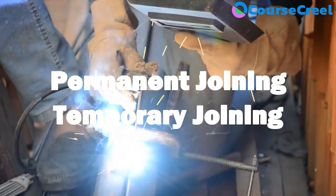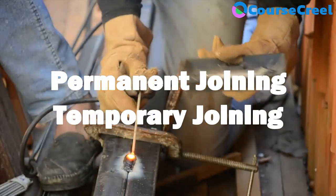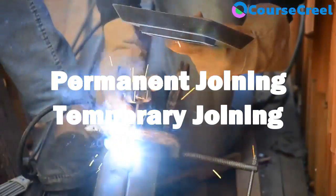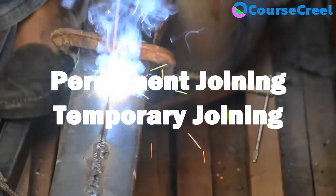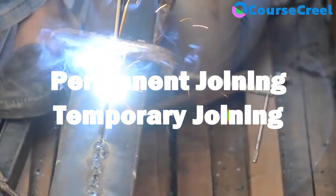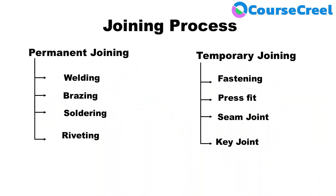If we classify joining processes, it is divided into two parts: permanent joining and temporary joining. Permanent joining means stronger fastening methods, defined by welding, riveting, coupling, and soldering. Temporary joining, which is less strong, is defined by fastening, press fit, seam joints, key joints, etc. These are the different types of joining processes used for the construction of different assemblies or products.